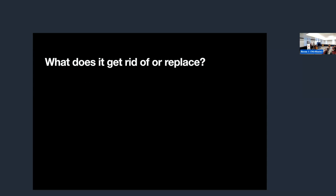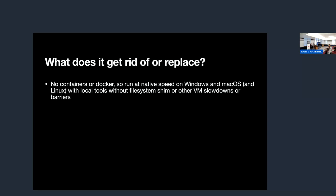What does it get rid of or replace in this context? Nix: no containers, no Docker. So everything runs at native speed on Windows and macOS, with your local tools, without monkeying around with file system shims or VM building or any other slowdowns or barriers associated with those ecosystems.